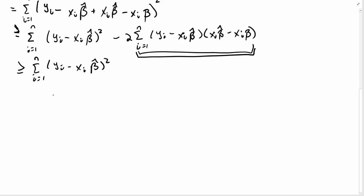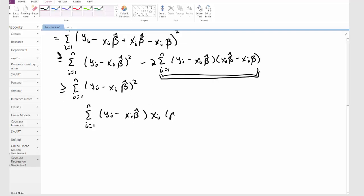So I want to solve summation i equal 1 to n, yi minus xi beta hat, xi times beta hat minus beta, I would like to solve that equal to 0.